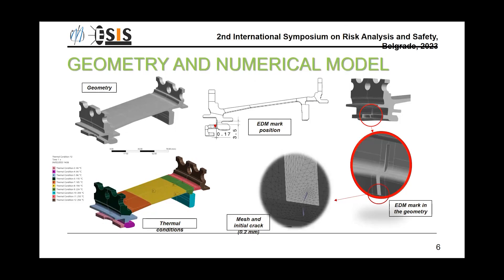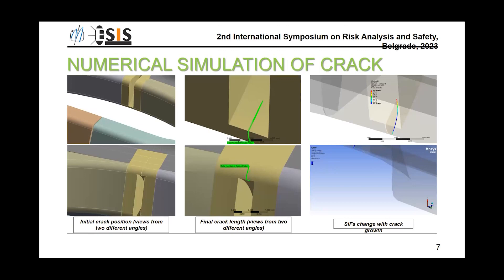At the beginning, we had to form the real geometry. A geometric model was created and thermal conditions as well as initial damage were added to the model to make it totally realistic. After that, we used extended finite element methods. A numerical analysis was conducted to simulate crack propagation. As you can see on the left side, we show the initial crack position in two views, surrounded by red color.